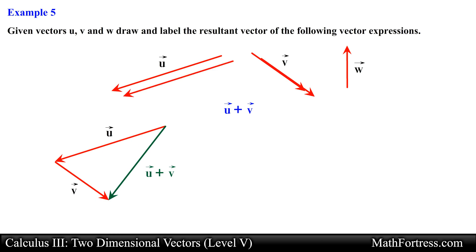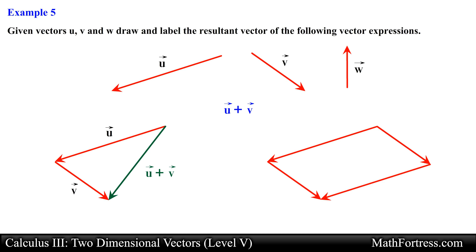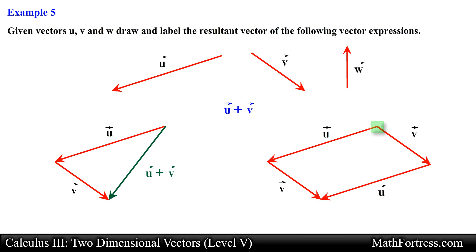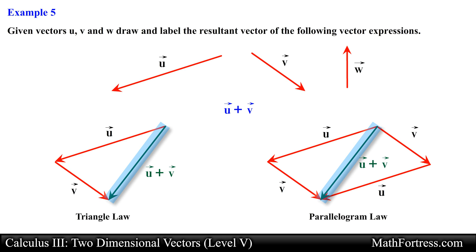Alternatively we can also make use of the parallelogram law — align the tails of both vectors together and make copies of each vector that are parallel to one another, forming the sides of the parallelogram. The resultant vector is drawn starting at the intersection where the tails coincide and extending along the diagonal of the parallelogram. Regardless of which method you apply you should obtain the same resultant vector.